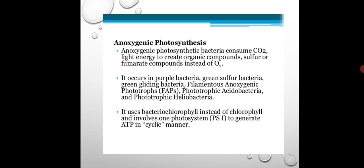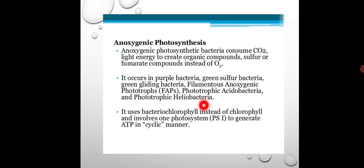The examples of anoxygenic photosynthesis include purple bacteria, green sulfur bacteria, and green gliding bacteria — also known as green non-sulfur bacteria, which are flexible filamentous bacteria — as well as phototrophic acidobacteria and phototrophic heliobacteria. These are examples of anoxygenic photosynthetic bacteria which produce different compounds as by-products during photosynthesis.